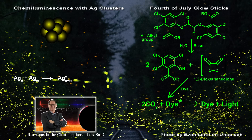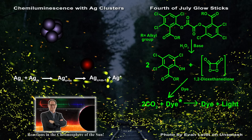The lesson of the fireflies for astrophysics is simple: stop thinking only of temperature and start thinking about chemistry if you want to understand the production of all chromospheric and coronal lines. Think of the fireflies when you examine emission lines in the atmosphere of the Sun.